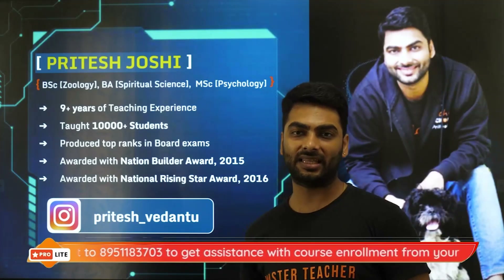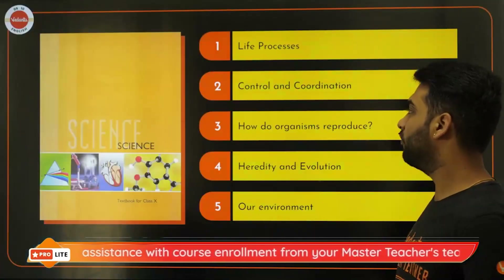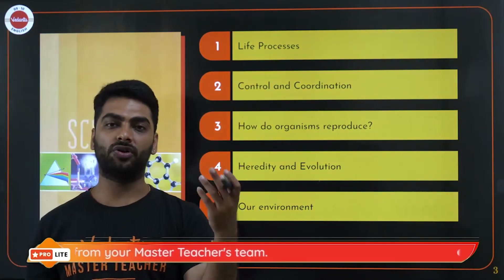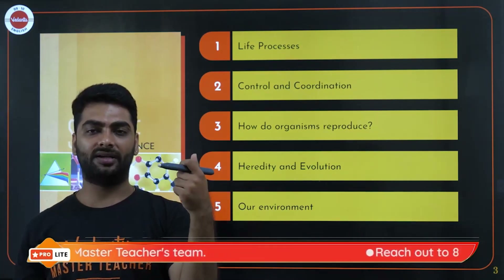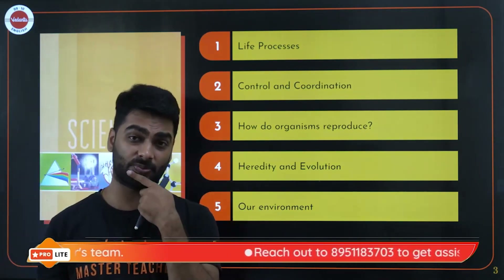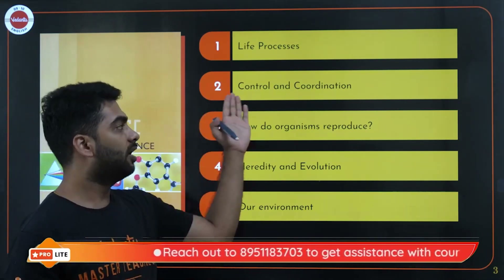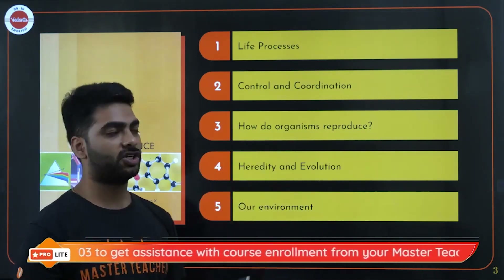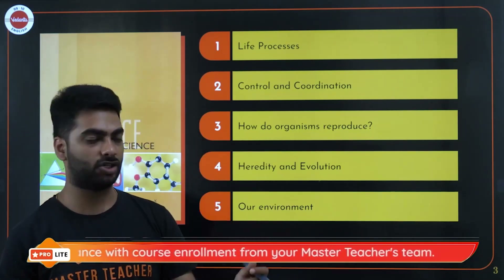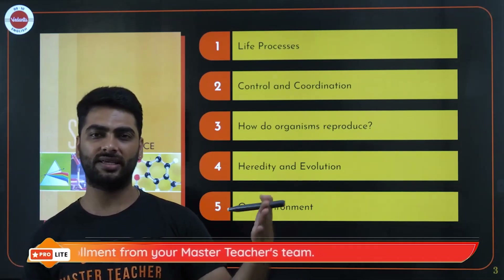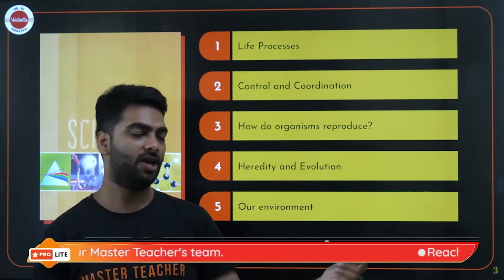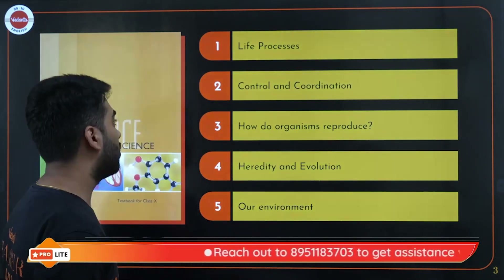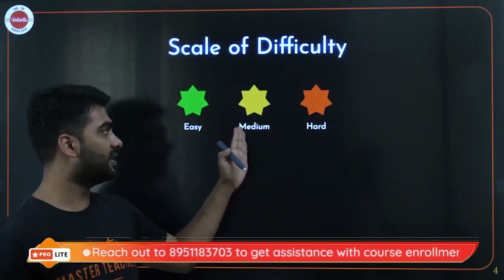This coupon code will help you learn from all the amazing master teachers of Vedantu — English, Math, Science, and SST — for just ₹8100 for the entire year. Now, these are the five chapters of Grade 10 biology: Life Processes, Control and Coordination, Reproduction, Heredity and Evolution, and Our Environment. On the difficulty scale, green is easy, yellow is medium, and red is hard.